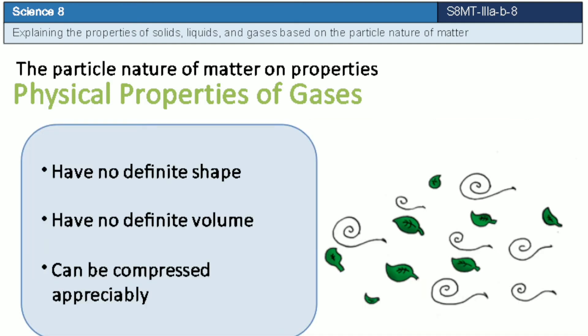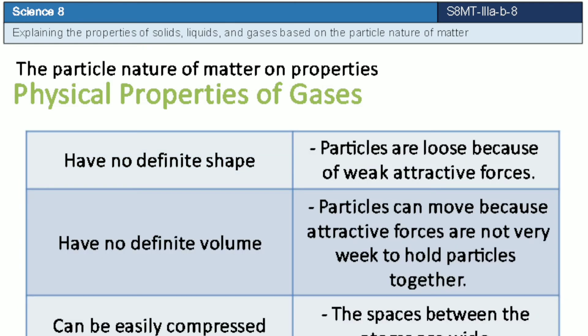Gases have no definite shape and volume. Gases can be compressed appreciably, and can greatly expand upon heating. First, gases have no definite shape nor definite volume because the attractive forces between the particles are too weak to hold them together. Second, gases can easily be compressed because of the wide empty spaces present between the particles.